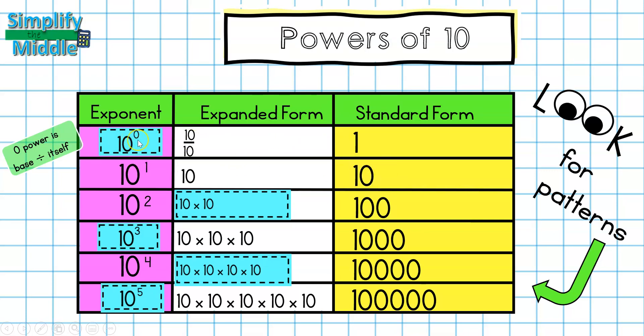Notice that this exponent says 0, and there are no 0s in the standard form. This exponent says 2, and there are two 0s in the standard form.